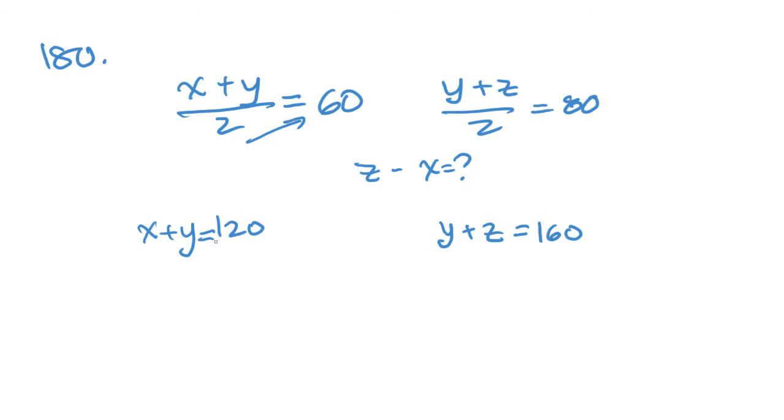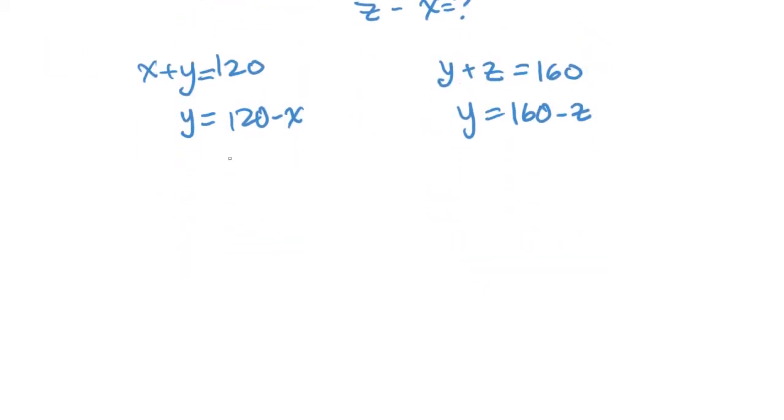Both of these equations have a y in them, so let's solve for y and set them equal to each other. y equals 120 minus x on the left, and y equals 160 minus z. Let's set them equal to each other, and we get 120 minus x equals 160 minus z. When we move 120 to the right and z to the left, we get z minus x equals 160 minus 120, which is 40. And z minus x is what we were solving for, so we know z minus x equals 40. 40 is answer B.